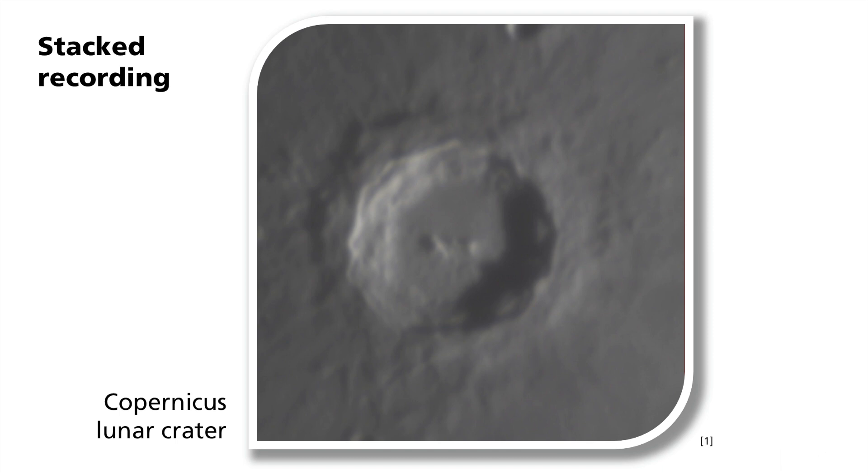This image is a composite of several images taken with a telescope positioned on Earth. Individual images have been added to improve the signal. This process is called stacking.